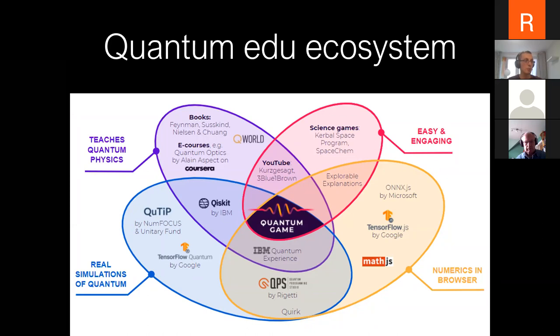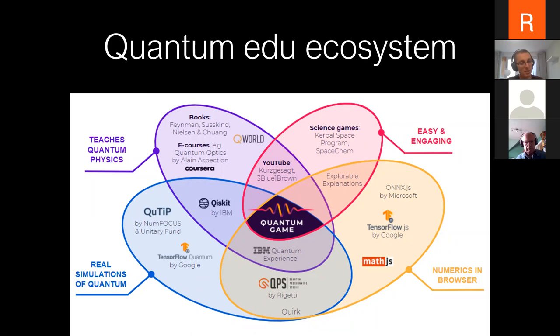The quantum game project sits somewhere between a classical textbook teaching quantum information, quantum optics, and quantum cryptography; a science-based game like Kerbal Space Programme where you simulate orbital physics; and various tools for accurately simulating discrete quantum states.